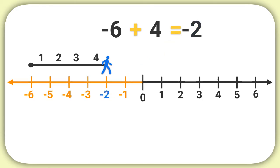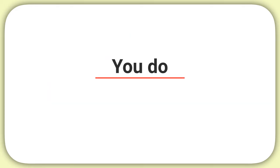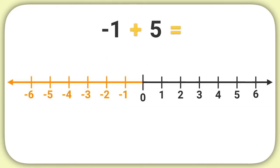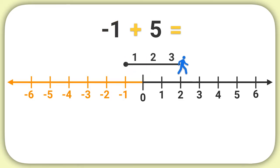So negative 6 plus 4 is negative 2. Now it's time for you to practice on your own. What does negative 1 plus 5 equal? You start at negative 1, and you're adding a positive number. So we will walk forward 1, 2, 3, 4, 5 spaces. Now we're at 4 on the number line. So negative 1 plus 5 equals 4.